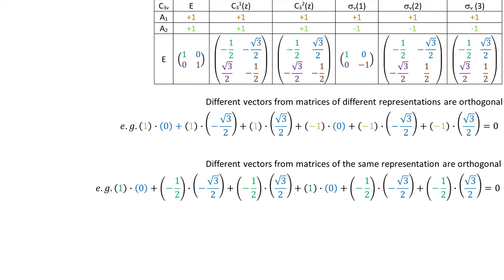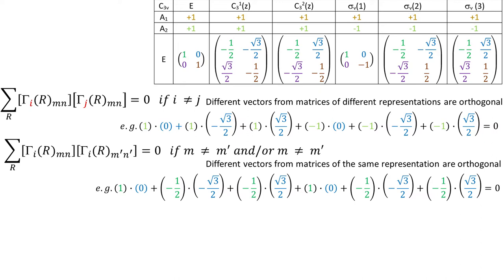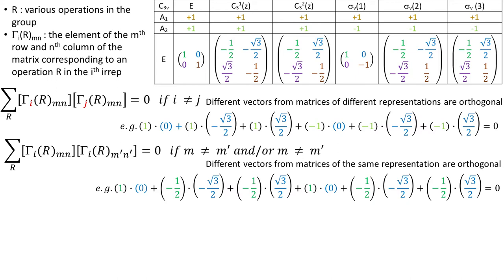Now let's look at some formulas that describe these two situations. R denotes various operations in the group. Tau I R M N denotes the element of the Mth row and the Nth column of the matrix corresponding to an operation R in the Ith EREP. Bit Mouthful. Notice that in the first equation we have Tau I dotted with Tau J, meaning the vectors come from different representations. You might notice that in both parts of this equation we have MN. But this is just a compact mathematical notation.